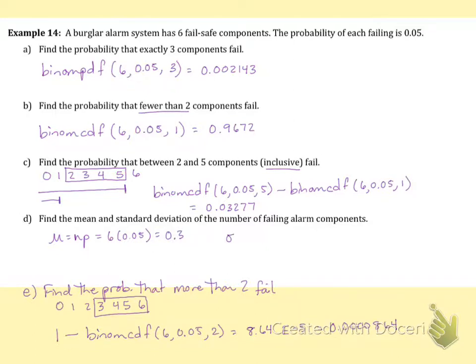And the standard deviation is the square root of npq, which is the square root of 6 times 0.05. And then remember, q is the complement of p. So I'll do 1 minus 0.05, which is 0.95. And when you put that in your calculator, you'll get 0.5339.